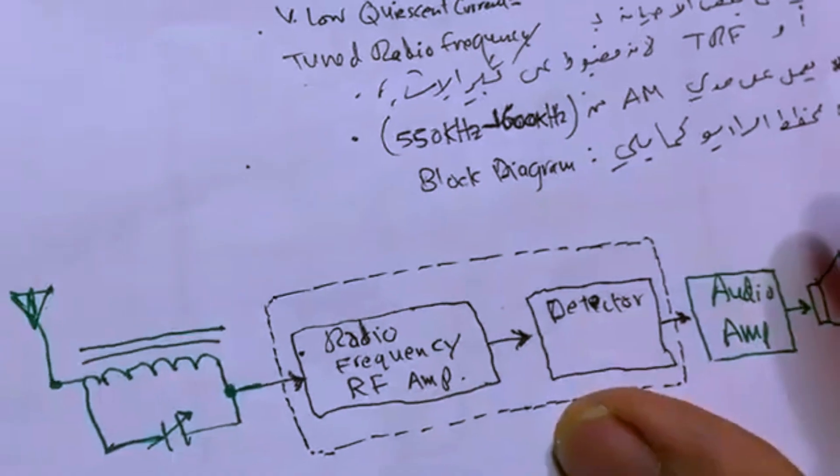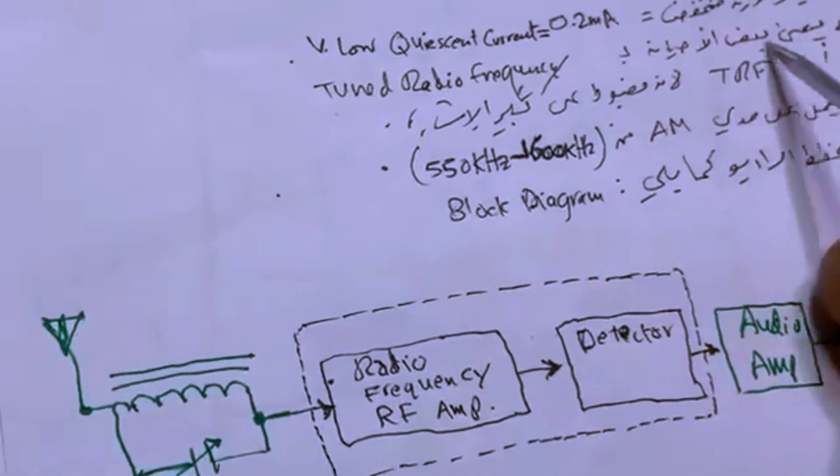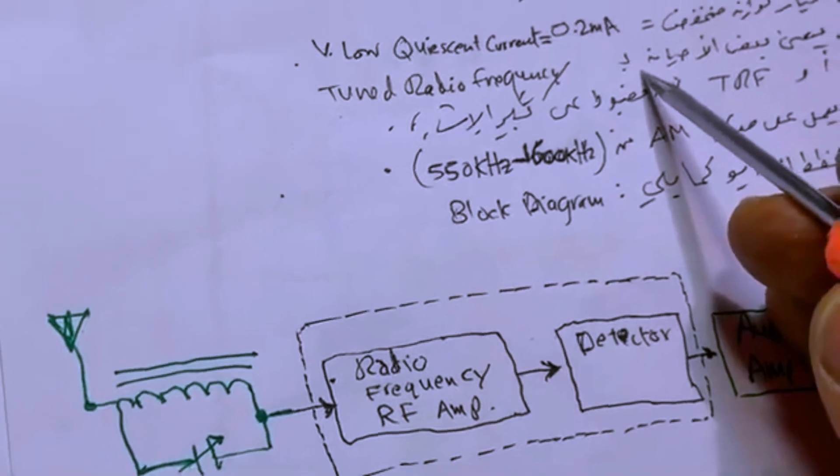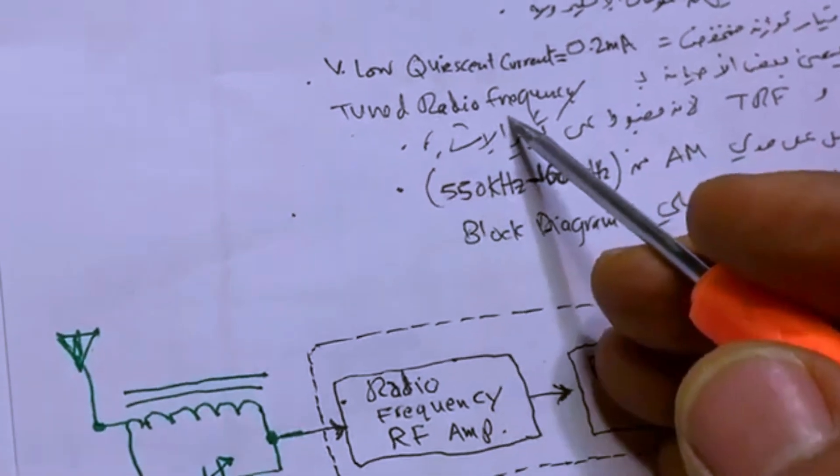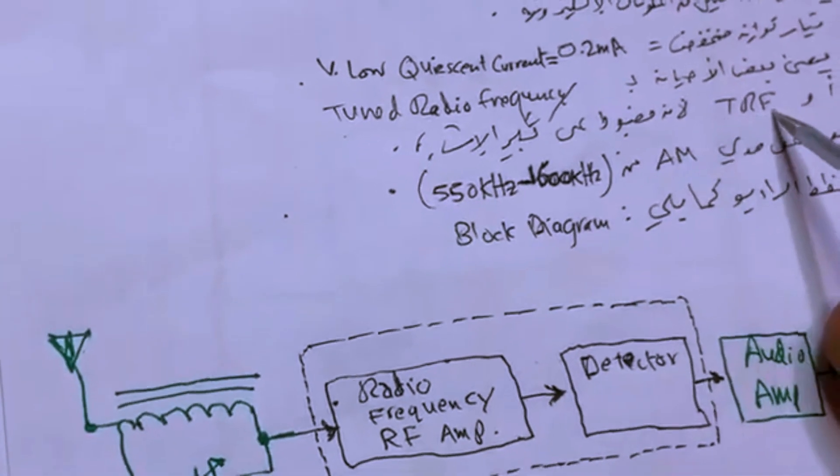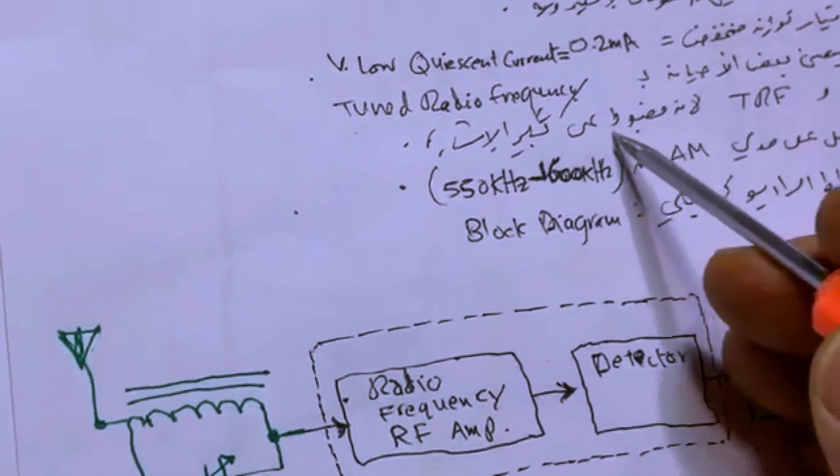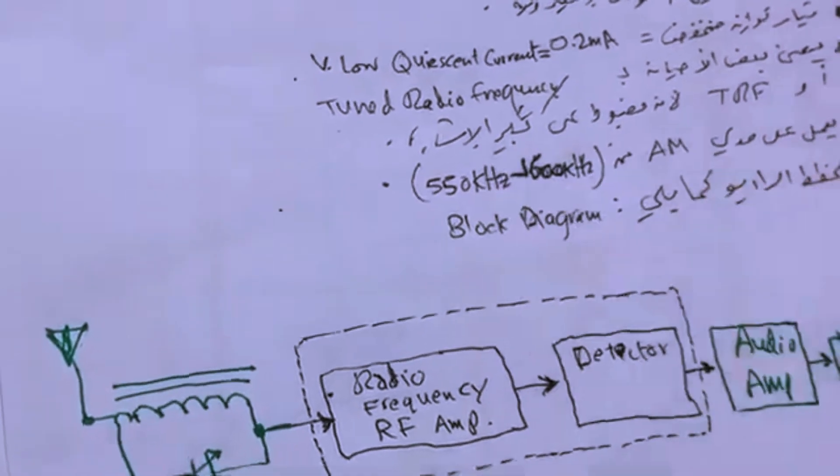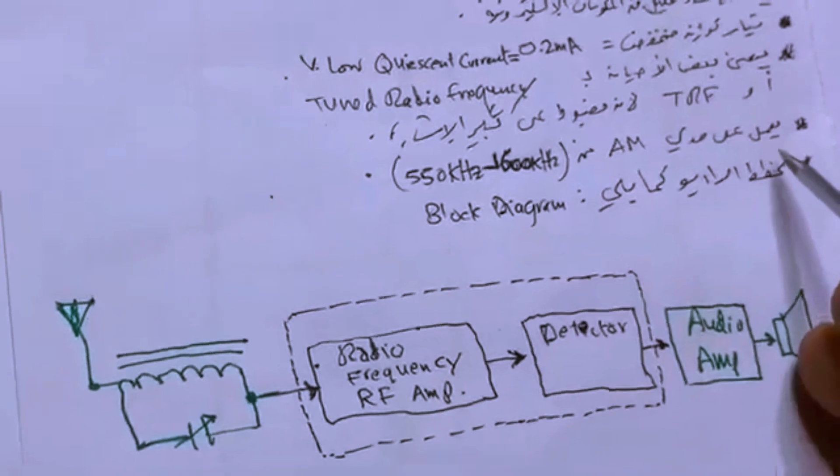It requires very low current, 0.2 milliamperes. Sometimes it is called Tuned Radio Frequency TRF because it's actually set up for amplifying the frequency.